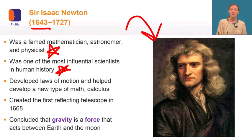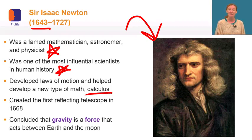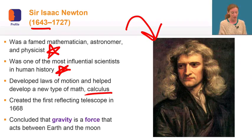He developed the laws of motion and helped develop a new type of math called calculus to model them. He created the first reflecting telescope in 1668, and at the time, it was ten times more powerful than any telescope in use.